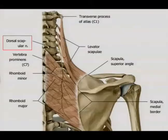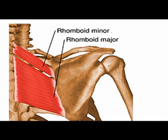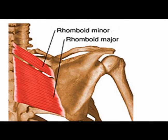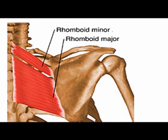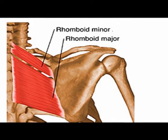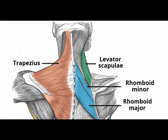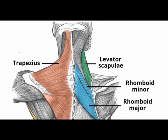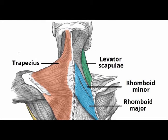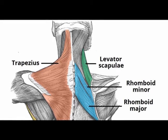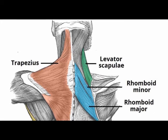Both of these muscles are innervated by the dorsal scapular nerve, and both work together to retract the scapula and to rotate the scapula downwards. So the concentric action of the rhomboid minor and the rhomboid major is scapular retraction and downward rotation of the scapula.